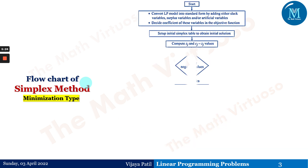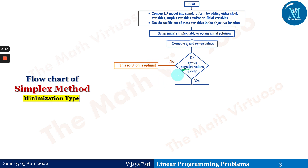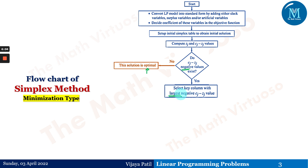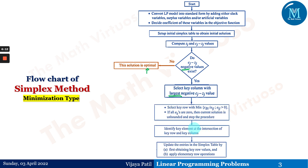For minimization, the first two steps remain the same. But when computing Cj minus Zj, if we are getting negative values, only then do we proceed ahead. If all Cj minus Zj values are positive, that means we have reached the optimal solution — it is exactly opposite to maximization. So, if you are getting negative values, proceed; if you are getting positive values of Cj minus Zj, terminate at that point and you have reached the optimal solution.